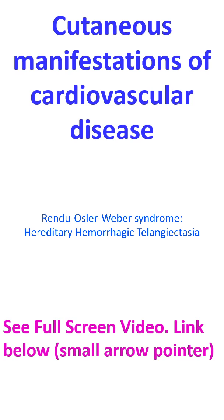Telangiectasia of lips, tongue and mucous membranes can occur in Rendu-Weber-Osler syndrome. Telangiectasia can cause bleeding from the involved sites. When present in the lungs, it can cause right-to-left shunting of blood and central Cyanosis.